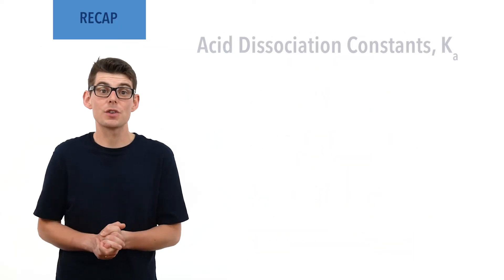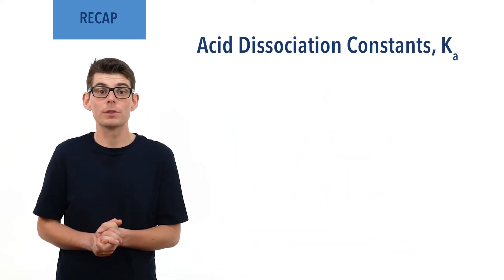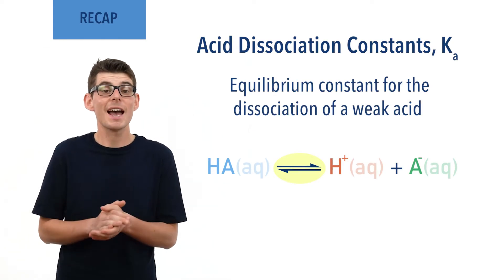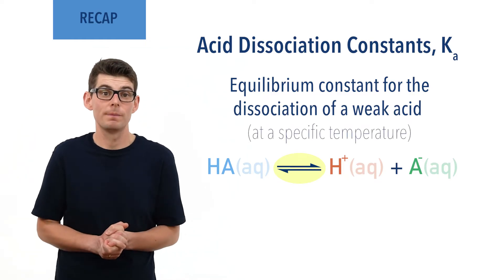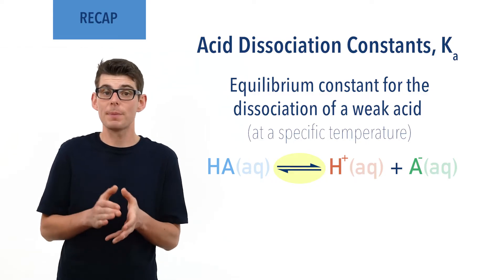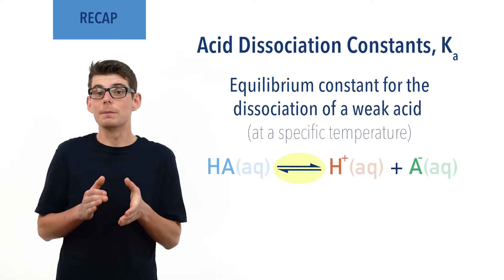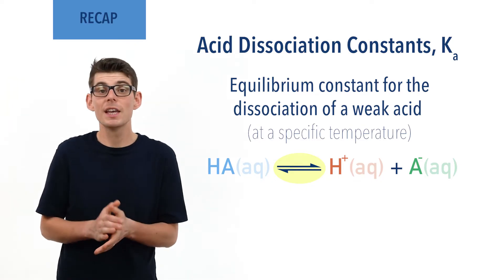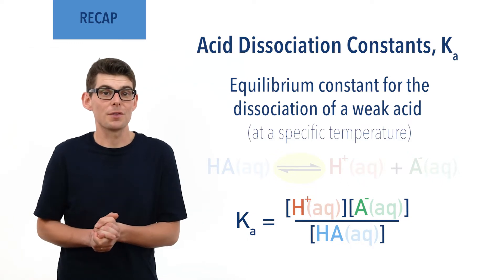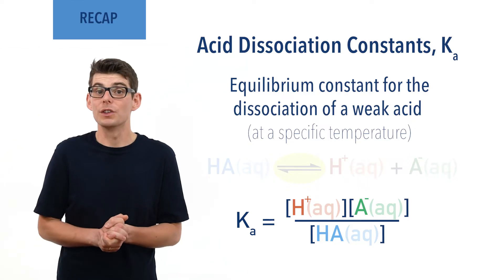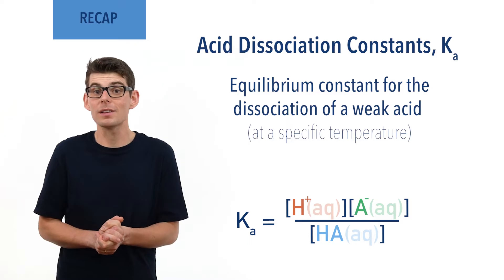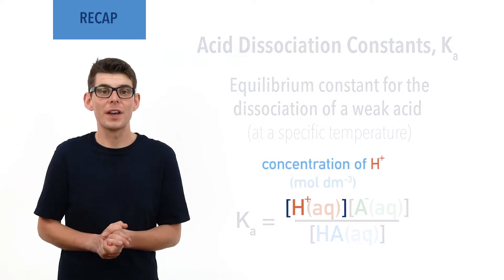Acid dissociation constants, Ka, are equilibrium constants that describe the position of equilibrium for the dissociation of a particular weak acid at a specific temperature. They are based on the concentration of weak acid molecules, H plus ions, and conjugate base ions in the equilibrium mixture, and can be calculated using the expression: Ka equals concentration of H plus times concentration of A minus, divided by concentration of HA. Square brackets represent concentration — for example, [H+] means concentration of H plus ions.